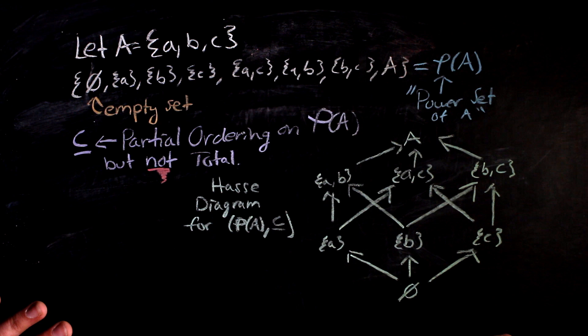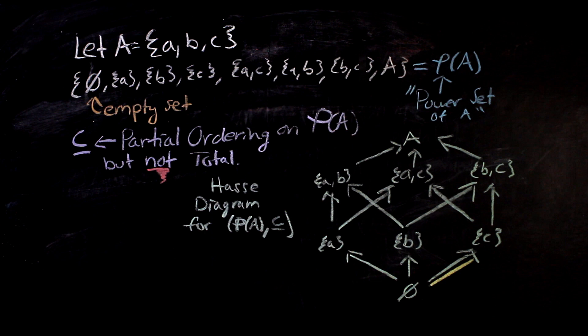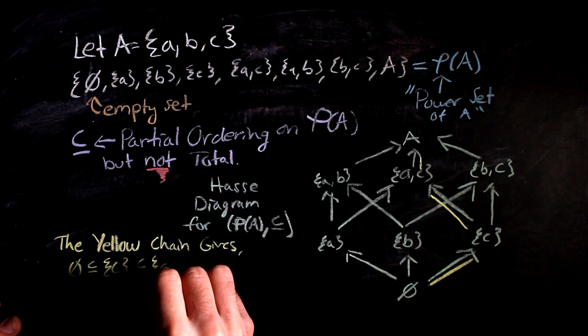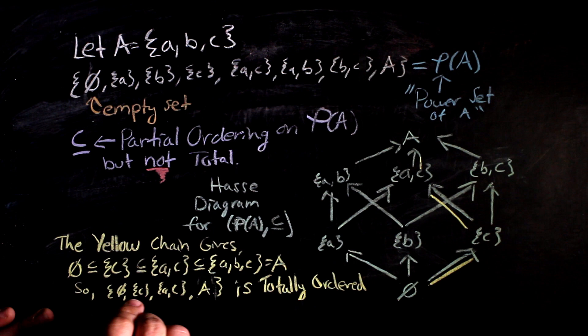So for example, if we start at the bottom of the Hasse diagram, the empty set is a subset of the set containing C, which is a subset of the set containing A and C. And so the set of the set A, the set A and C, and the set A is a totally ordered subset of the power set.